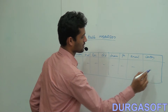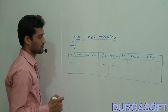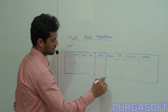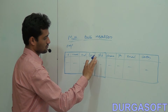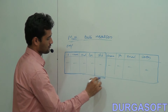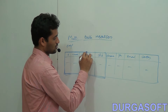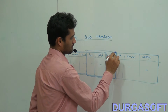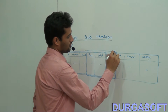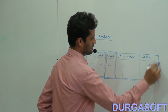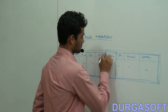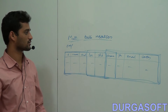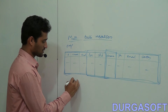Now I want to partition this whole EMP table into a number of sub-tables. ID, name, salary, location, and department ID go into one table. Location, department ID, and department name go into another table. Department name, phone number, email ID, and country go into a third table. I want to split this entire table into three tables.